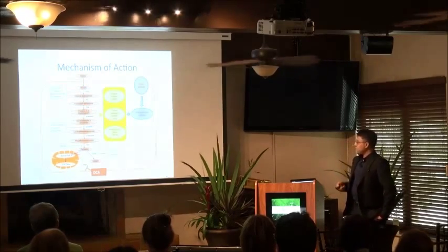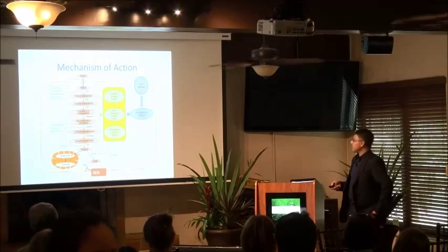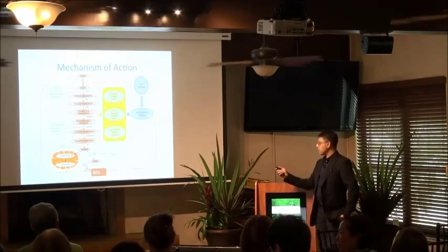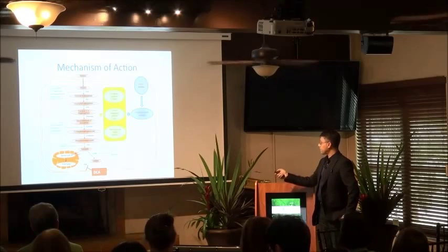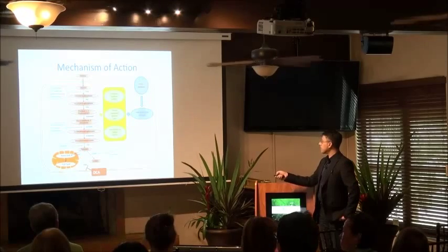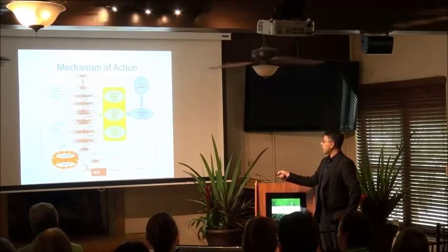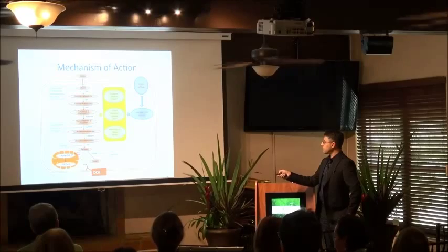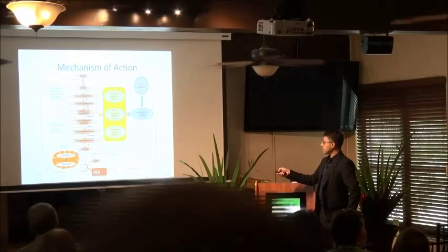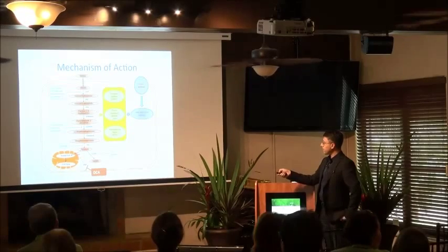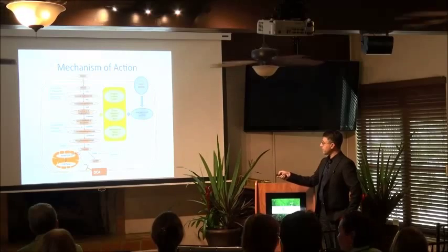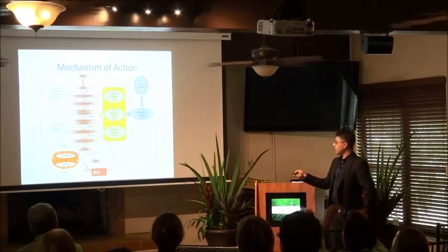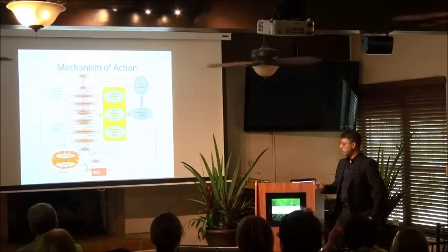Looking at the mechanism diagram: DCA interferes right here, blocking this enzyme — pyruvate dehydrogenase kinase — which allows PDH to work effectively and takes the pyruvate into the mitochondria, where you can generate ATP. So it shuts down the fermentation pathway.